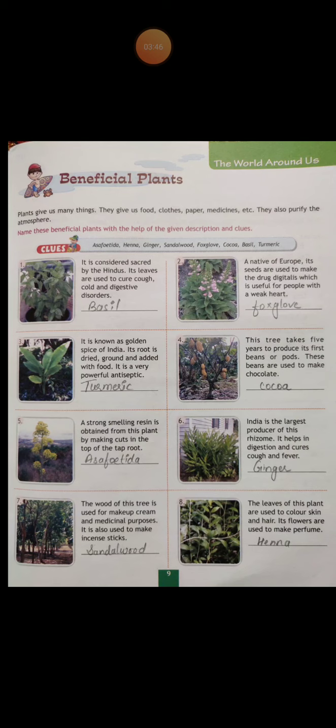Now we'll see the next page, page number 10: literary terms — the magic of words. You can see this page in your book. You need to write the answers, but I have already written them here so you can note down in your book. The high point of suspense in a story is known as climax. The second one: a short story that illustrates a moral lesson or religious principle — we call it a parable.